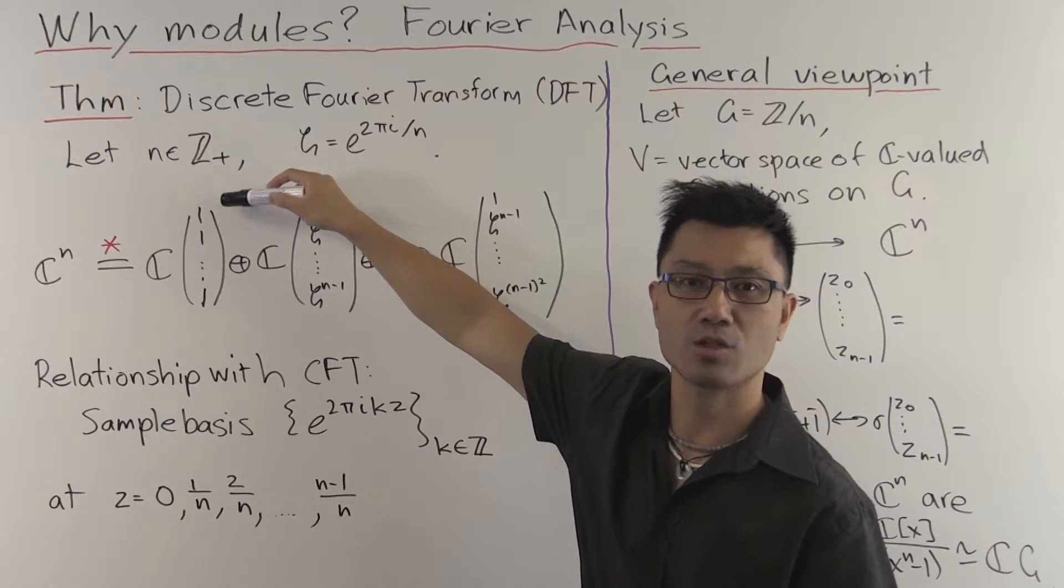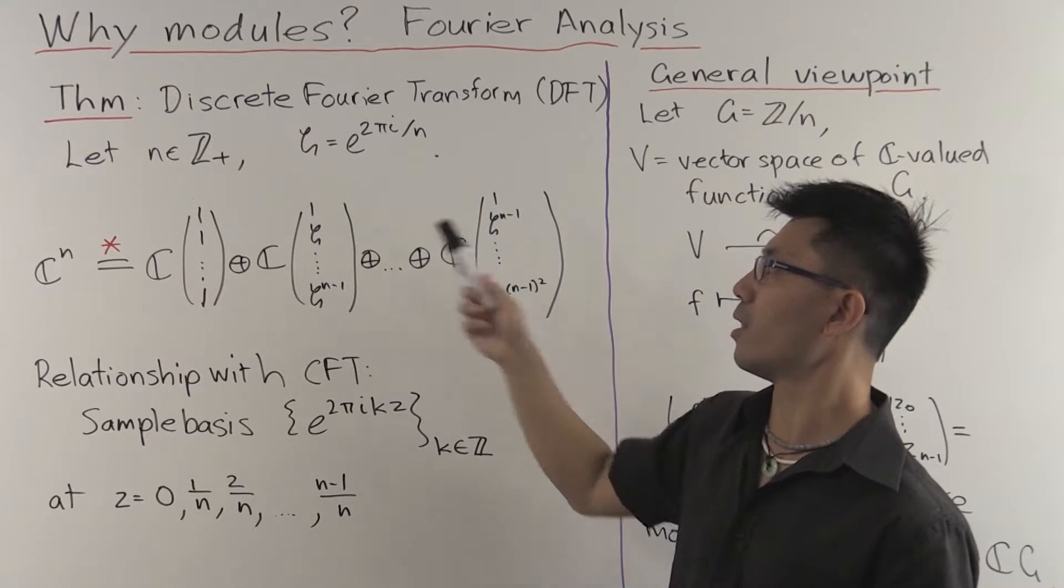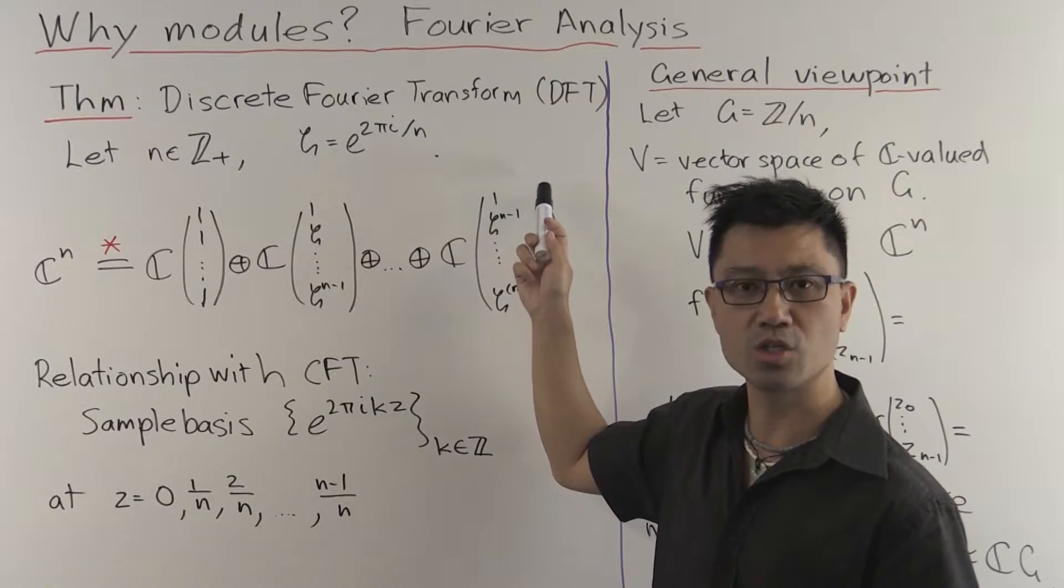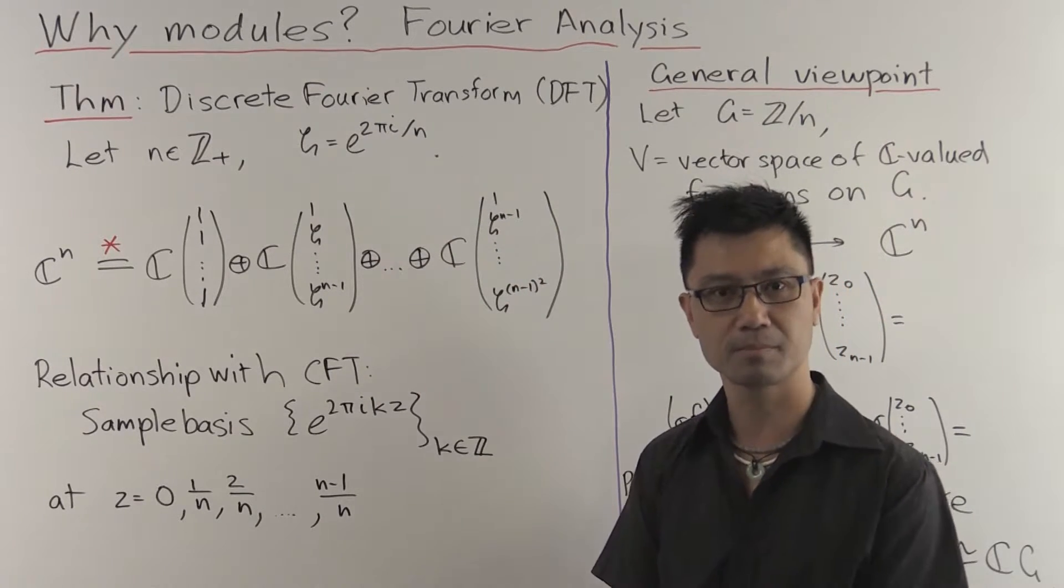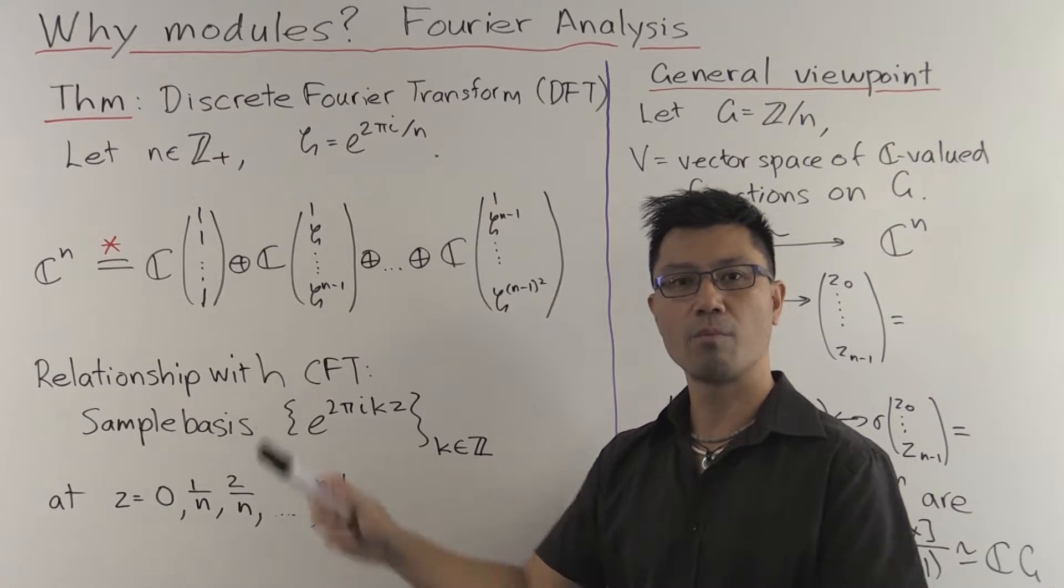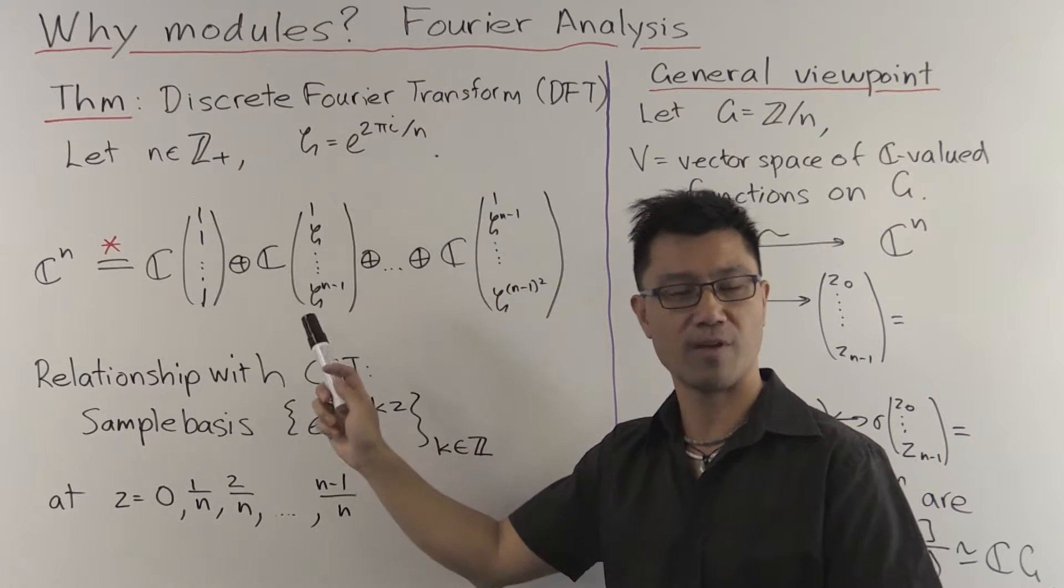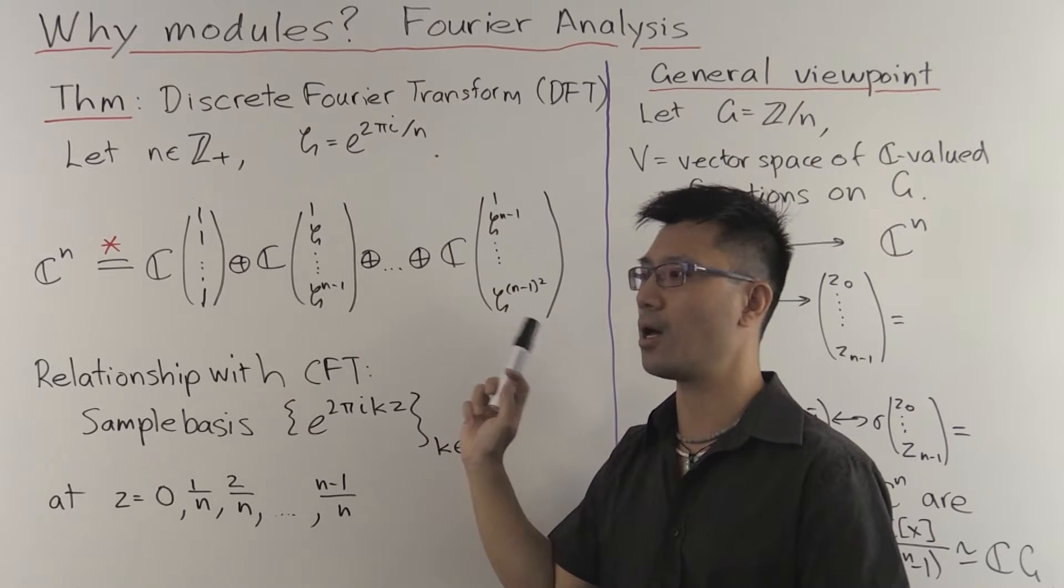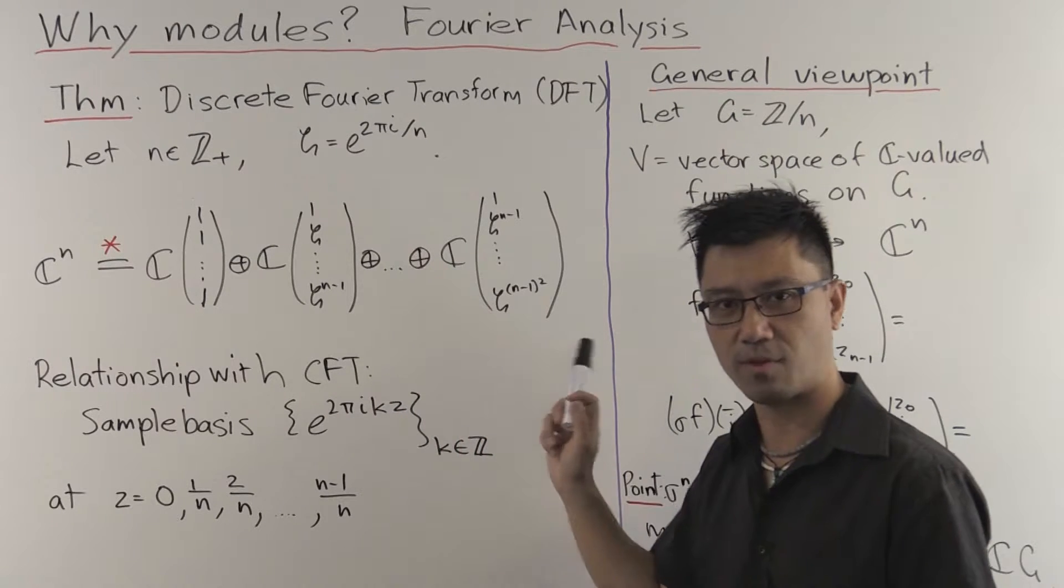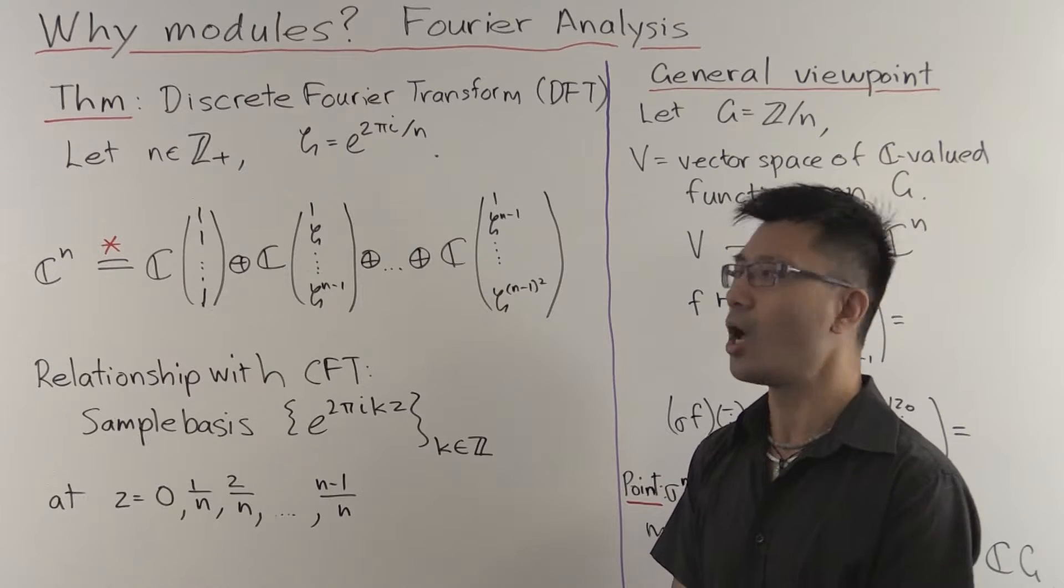One way to look at these vectors is very simply that they're geometric progressions. This one has common ratio 1, this one has common ratio ζ, and all the way up to the last one has common ratio ζ^(n-1). And it's quite easy to check that this is a basis. You can form the square matrix with these vectors as its columns, and that's a Vandermonde determinant, and you can check that that's non-zero.